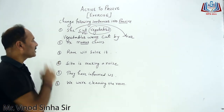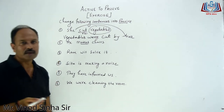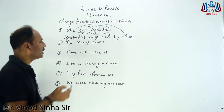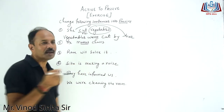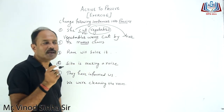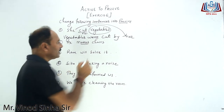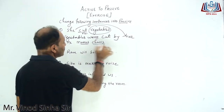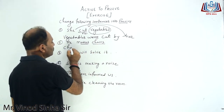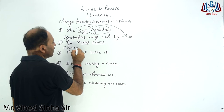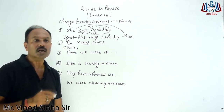Next: 'He makes chairs.' It's very clear — present simple. In present simple, the helping verb is 'is/am/are' and third form. Chairs — it will come here as the new subject. Now we have to see whether the new subject is singular or plural.